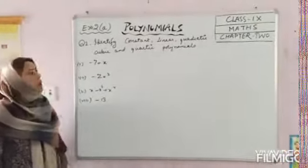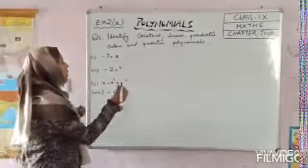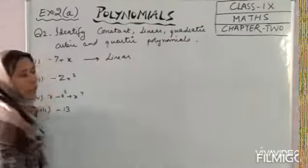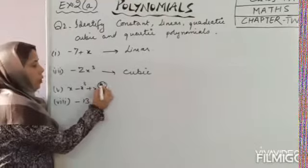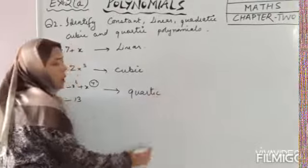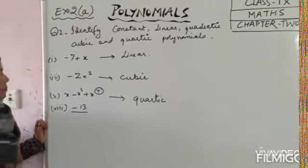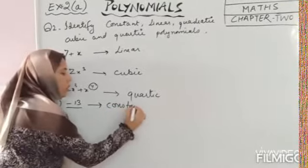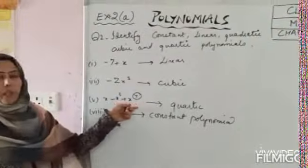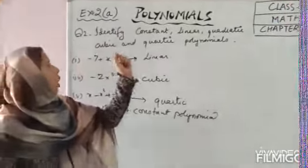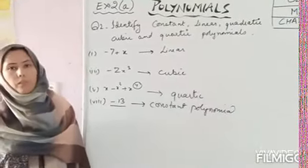Question number 2: identify constant, linear, quadratic, and cubic polynomials. The first has degree 1, so it is a linear polynomial. The next has degree 3 — it is a cubic polynomial. The next has degree 4 — it is a biquadratic polynomial. The next has no variable, so it is a constant polynomial with degree 0. Remember: quartic has degree 4, cubic has degree 3, linear has degree 1, and quadratic has degree 2.